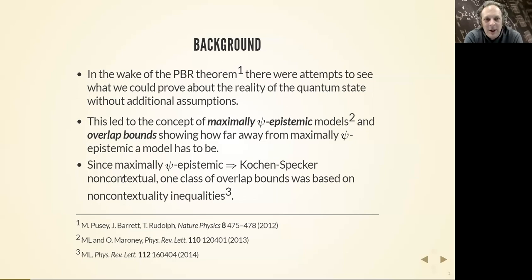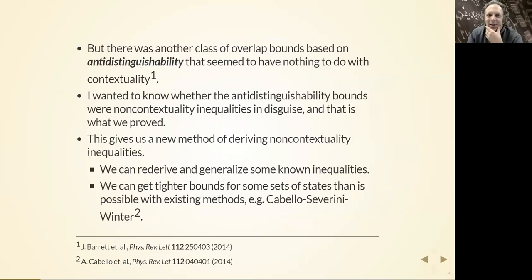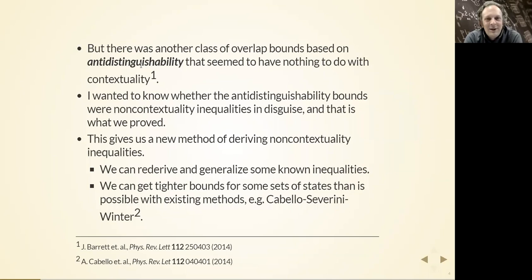There was another class of overlap bounds in the literature based on the concept of anti-distinguishability. This initially seemed to have nothing to do with contextuality — at least wasn't connected to any known results about contextuality. Since I had pretty much exhausted what we could learn about maximally psi-epistemic models from contextuality, I wanted to know whether this other class of bounds was really something to do with contextuality in disguise, or whether it was something independent. What we ended up proving was that these were actually non-contextuality inequalities.